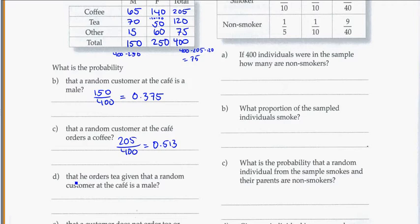Part D. That he orders tea given that a random customer at the cafe is male. So here we have a given problem. And that's my hint. I know that they're male. So that's the out of. So out of the men, which is 150 total, how many of those order tea? And we can see here that 70 out of 150 are going to order the tea, given that we know that they're male. So that's 0.467.